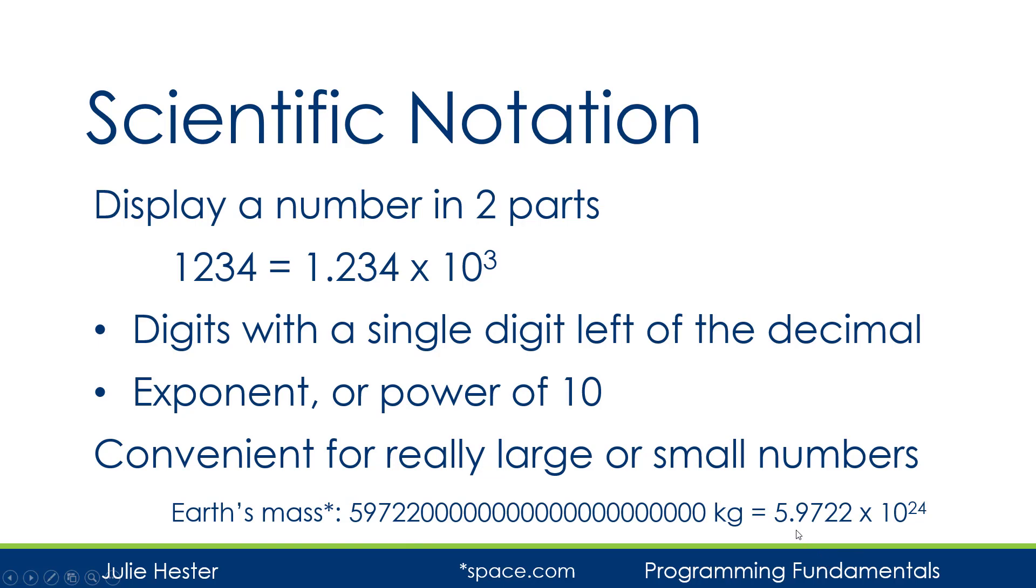I'm going to put a decimal point after the first digit. And then I need to count how many places is the decimal point moved. Well, I know there are 20 zeros here, and there are 4 digits after the 5. So therefore, I want this exponent to be a 24. And we can write this number as 5.9722 times 10 to the 24th power.